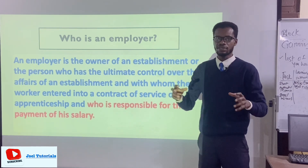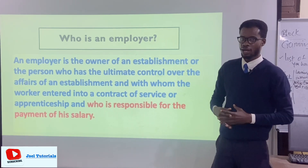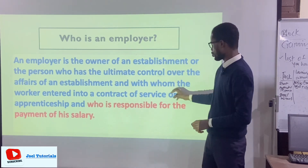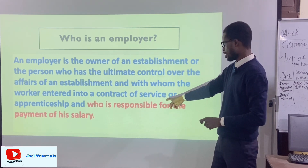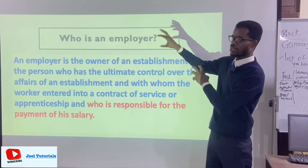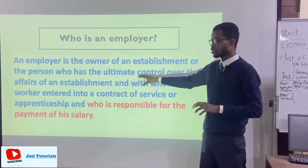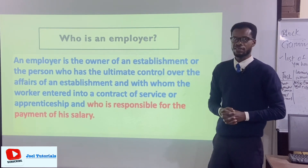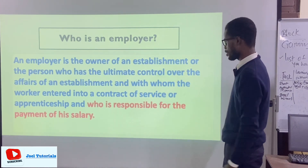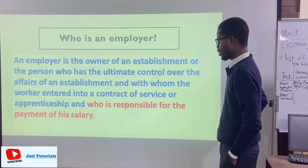Take note of these keywords: the owner of an establishment, the owner of an agency, the owner of an institution. That company is the establishment, and that person will enter a contract with someone who is going to render a service. So the employer is the job giver, the one signing the contract who has the ultimate control over the affairs of the firm or company.